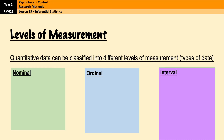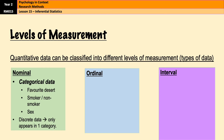Nominal data is categorical data — people exist in either one category or another but can't exist in more than one. Examples include favourite dessert, smokers versus non-smokers, or sex. It's known as discrete data, meaning you can only be in one category.